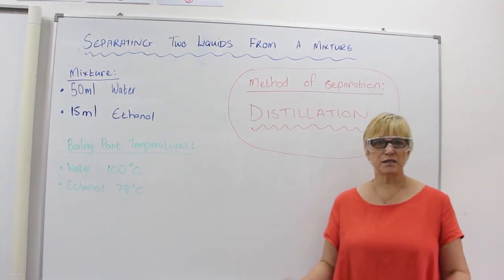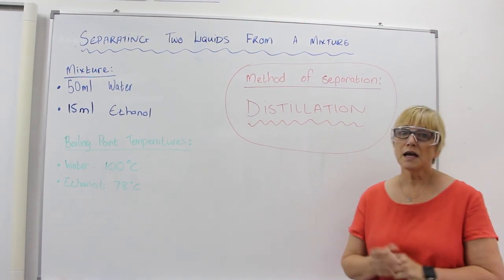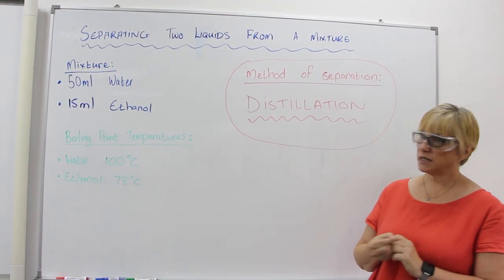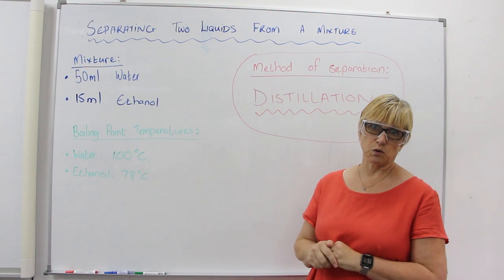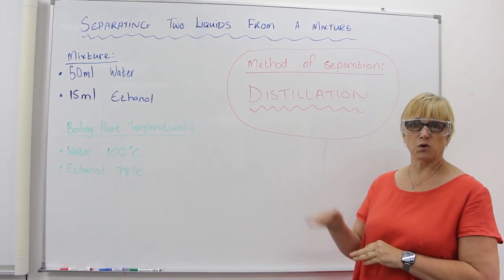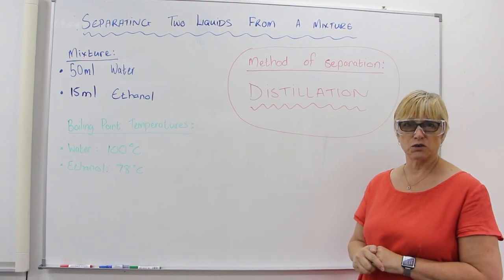Our mixture is going to consist of 50 milliliters of water and 15 milliliters of ethanol. A key piece of information is that those two liquids have different boiling points. Water boils at 100 degrees Celsius and ethanol boils at a lower temperature of 78 degrees Celsius.